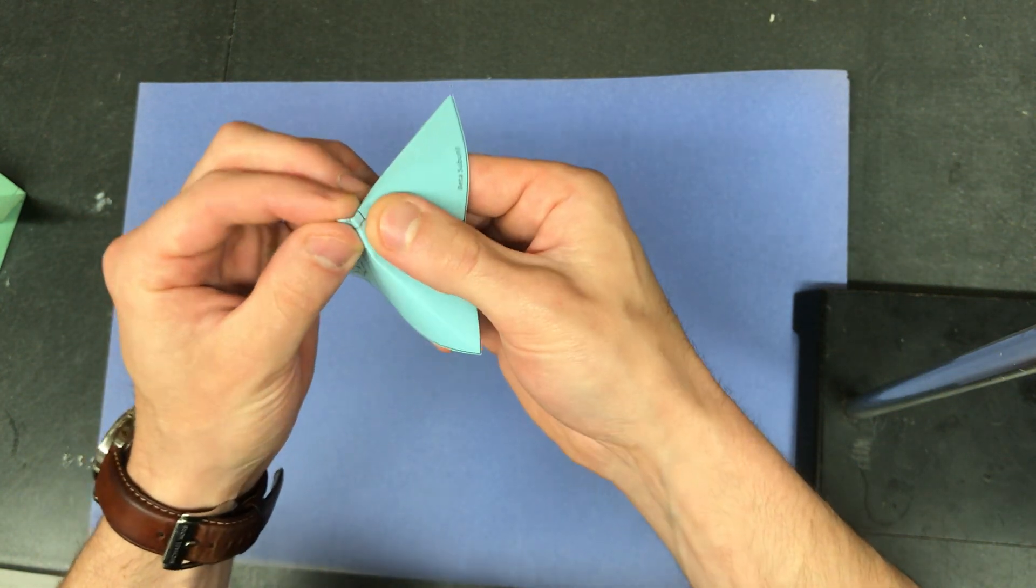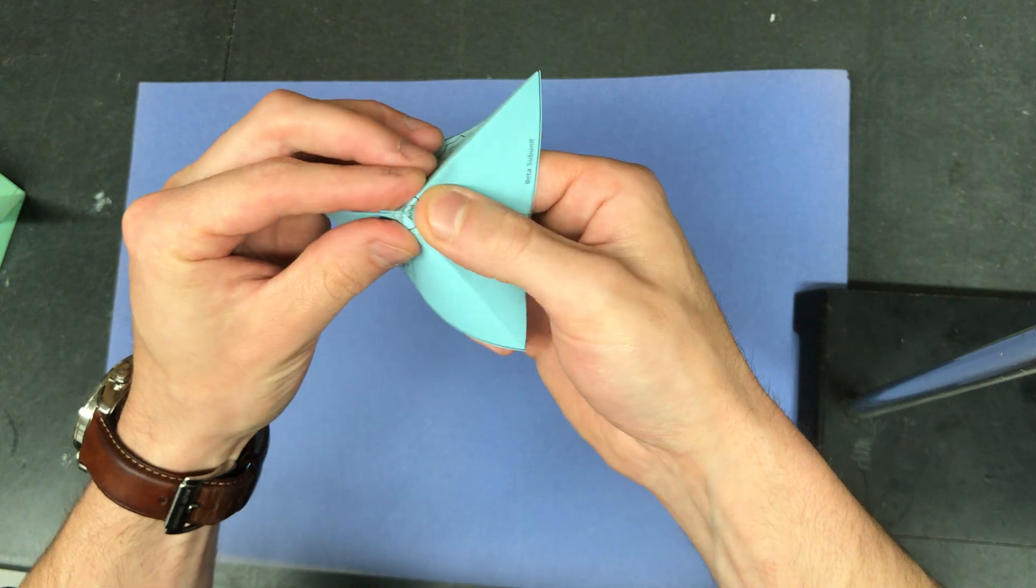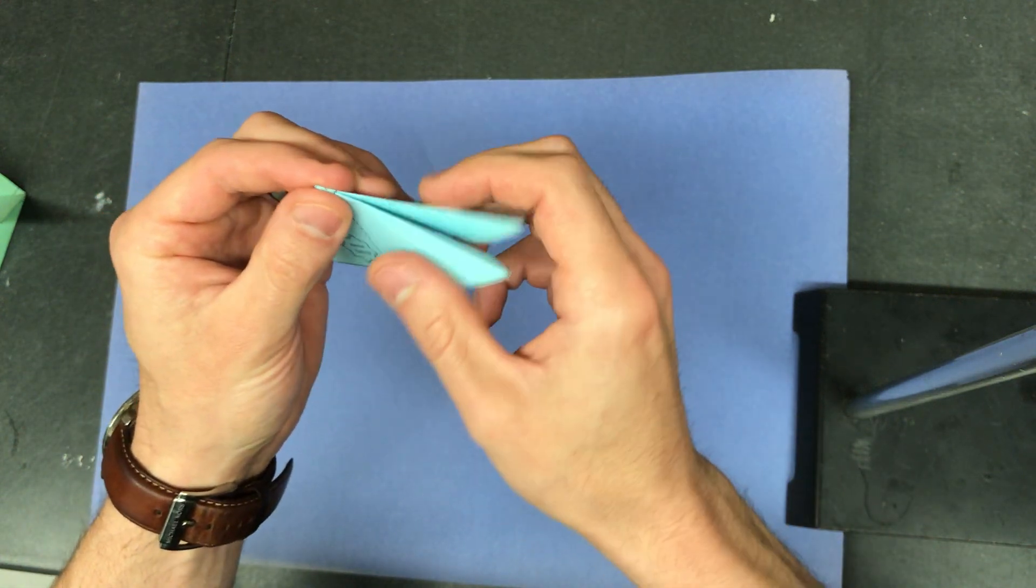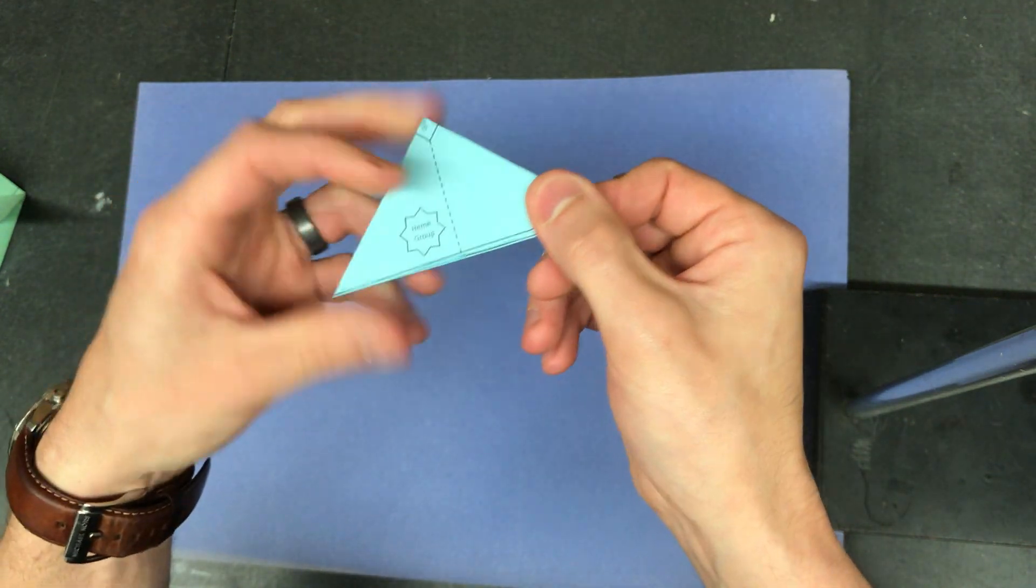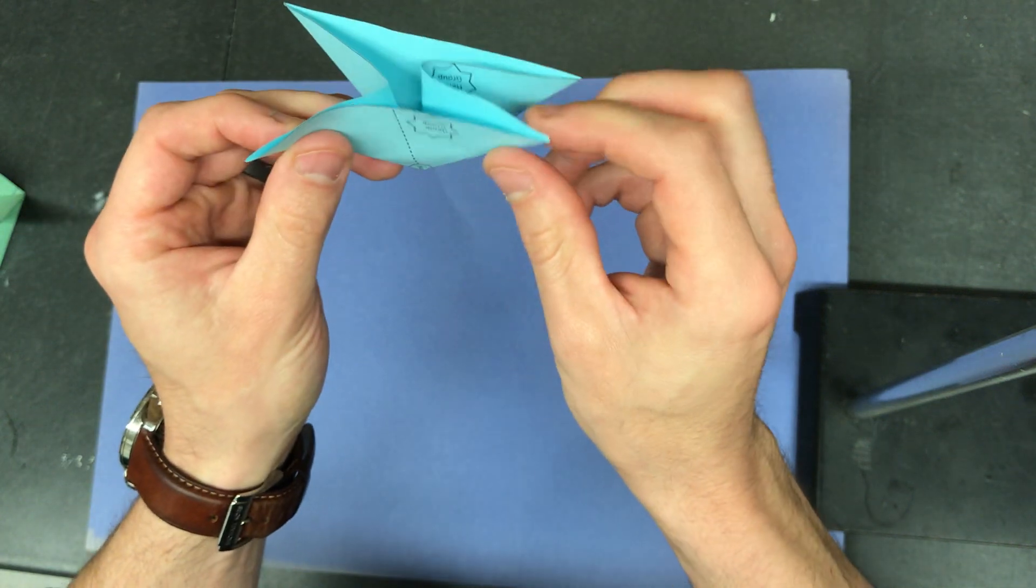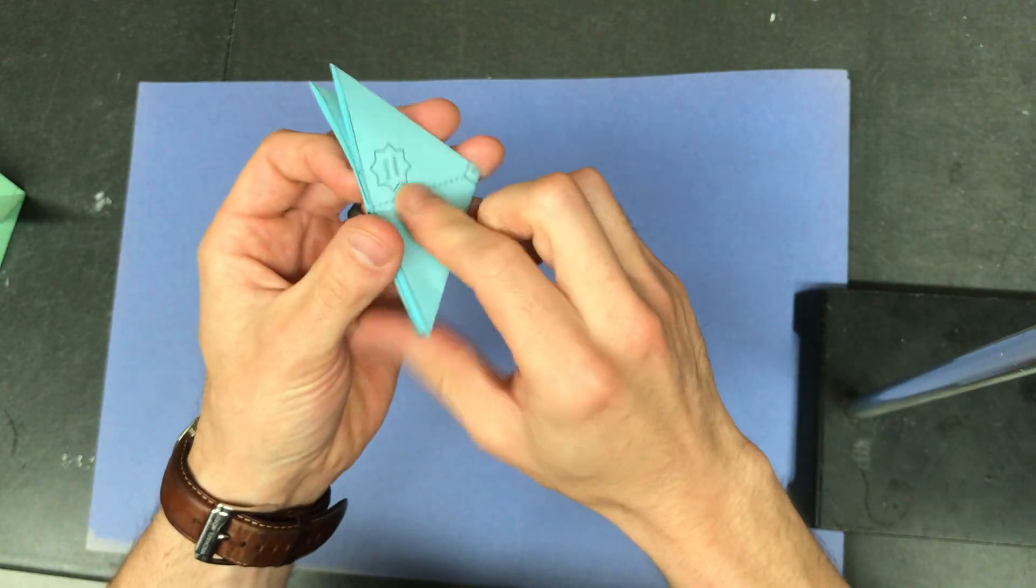Push this dotted line in and make sure it creates a point at the top. Now you have a triangle with the folds inside, and you're going to do that for these two sides as well.